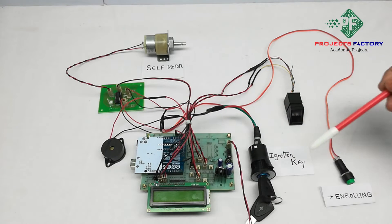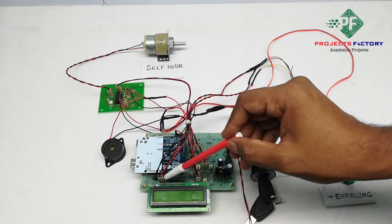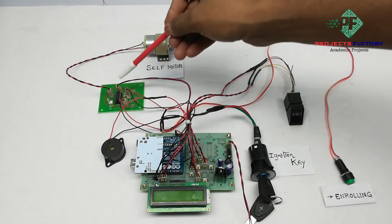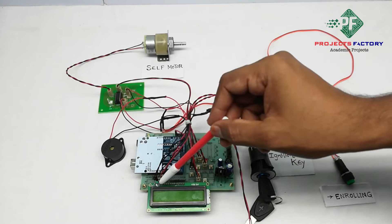Here ignition key, switch and buzzer connected to Arduino digital pins. Self motor controlled by L293D IC which is connected to Arduino digital pins.